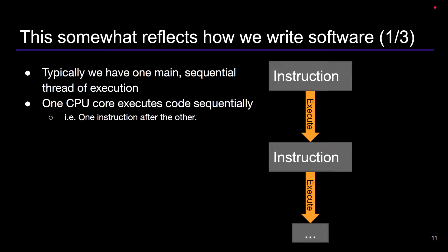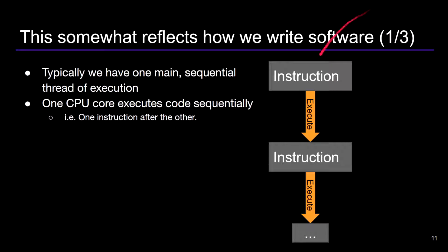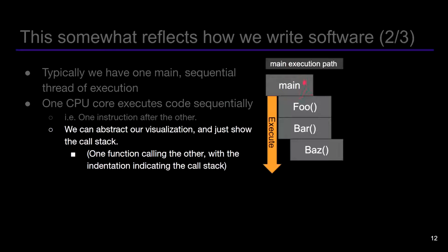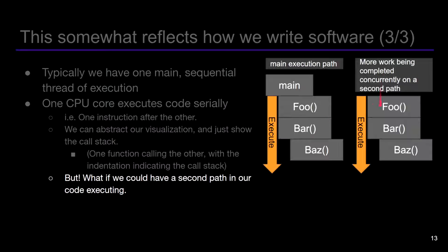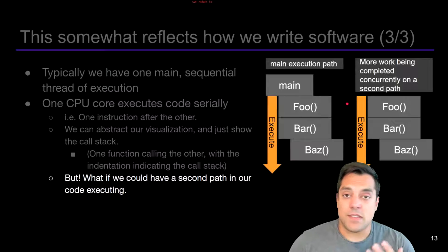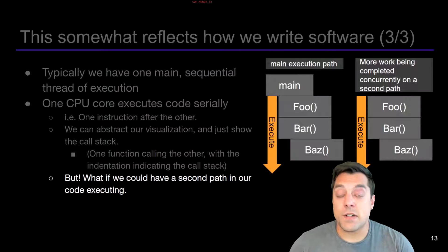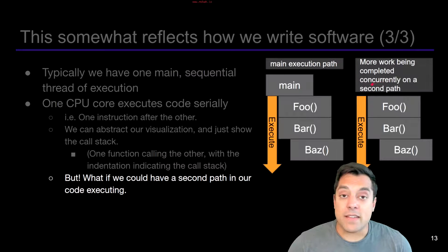This is the way that we typically look at software when we've been writing it. Typically, when we write software, we write it in a sequential fashion — one instruction executes, then the next, then another. So we have one CPU core focusing on one process, executing a series of instructions sequentially. We can think of this as our function calls: a main function, one function called from it, another function called, and there's still a sequential execution. However, what if we could have a second path of our code executing concurrently? We'd be getting twice as much throughput potentially, with two different paths in our code doing work.